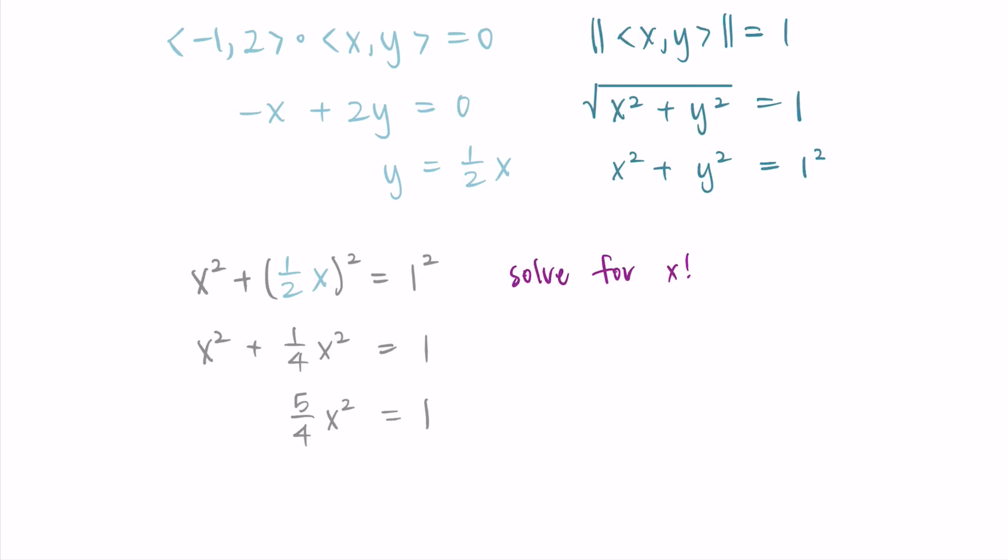This is just algebra at this point solving for x, so I can multiply by the reciprocal to solve for x squared. I have x squared is equal to 4 fifths, and now I just need to take the square root. So when I take the square root, I'm going to do a plus or minus, and this is where my two different solutions are going to come in. So I have x is equal to the plus or minus square root of 4 fifths, which is the plus or minus value of 2 over the square root of 5. So square root of 4 is 2.